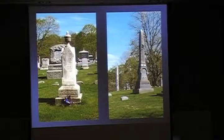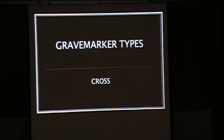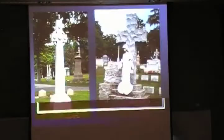These are obelisks. The one on the right is the typical pointed form, even though it's covered at the top by a shroud or drapery. The one on the left is called a truncated obelisk because it's cut off before it gets to the point and it's topped with an urn.